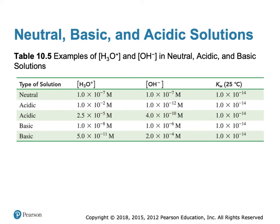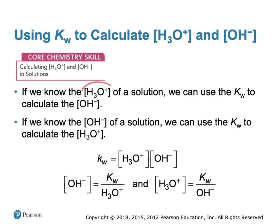A table gives examples of hydronium and hydroxide concentrations in neutral, acidic, and basic solutions. In a neutral solution they are equal. In an acidic solution — for example, 10⁻² for the hydronium ion, or another acidic solution at 10⁻⁵. In a basic solution, you have a greater concentration of hydroxide, such as exponents of −6 and −4. The product is always 10⁻¹⁴. If we know the hydronium concentration, we can use KW = 1 × 10⁻¹⁴ to calculate the hydroxide concentration, and vice versa.